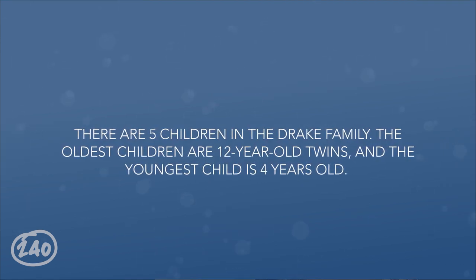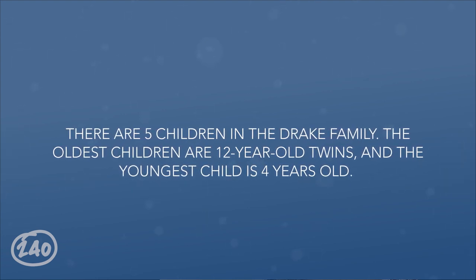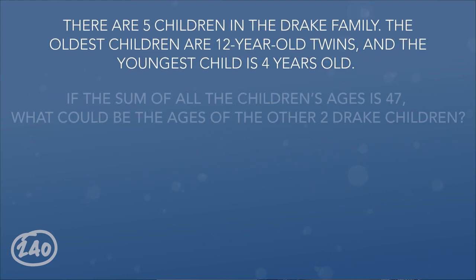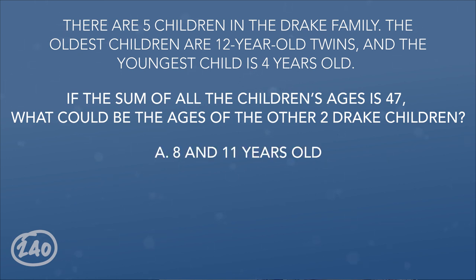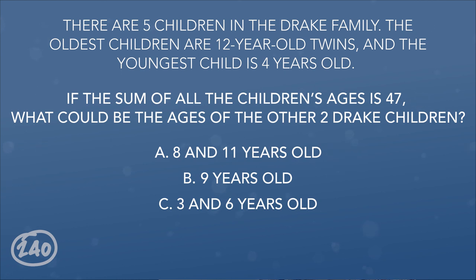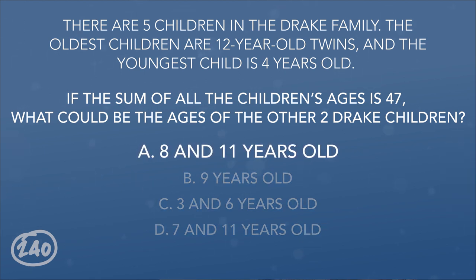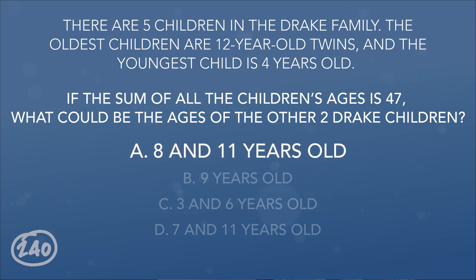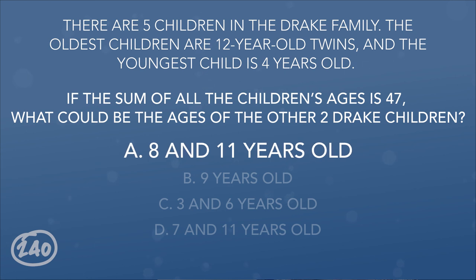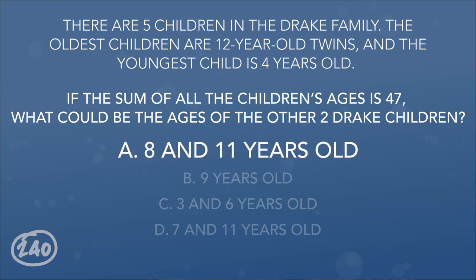Question 2: There are five children in the Drake family. The oldest are 12-year-old twins, and the youngest child is four years old. If the sum of all children's ages is 47, what could be the ages of the other two Drake children? A) 8 and 11, B) 9, C) 3 and 6, D) 7 and 11. The correct answer is A. The twins account for 24, plus the youngest is 4, totaling 28. That leaves 19 for the two remaining children, and only 8 + 11 = 19.